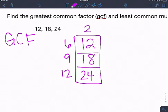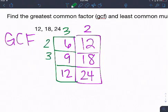And I'm looking, and I have 6, 9, and 12 left over, and I know that there is another number that goes into all three of those. So I'm just going to add on to my box here. 3 goes into all three of these. 3 times 2 is 6, 3 times 3 is 9.